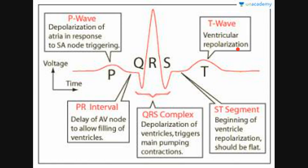After the QRS complex we have the T wave. The T wave shows ventricular repolarization. Now between the P wave and the Q wave we have the PR interval, which shows the delay of the AV node. This particular delay allows the filling of the ventricles. Now we have the ST segment, which shows the beginning of ventricular repolarization. The ST segment should be flat — if it is raised, elevated, or depressed, then it shows a disease condition within the heart.